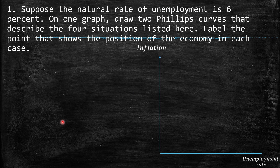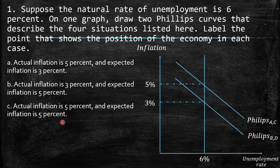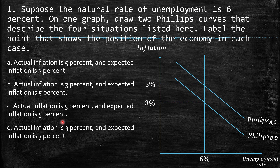Now, how we can graph them. On the y-axis we have inflation, and on the x-axis we have the unemployment rate. We have the long-run Phillips curve, which is perfectly vertical — so there is no relationship between these two variables. We have 6% as the natural rate. The first curve covers situations B and D, where actual inflation is 3% and expected inflation is 5%. At that point, the unemployment rate is exactly equal to the natural rate of unemployment for cases C and D.